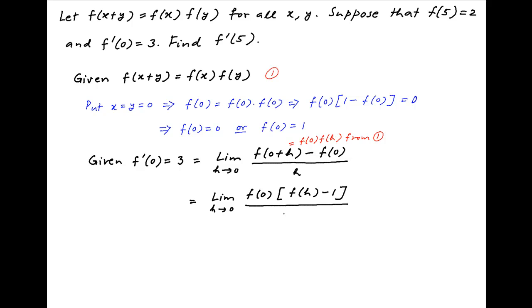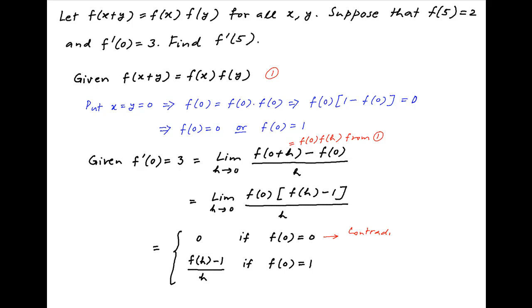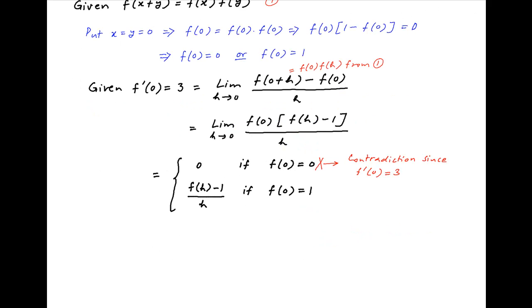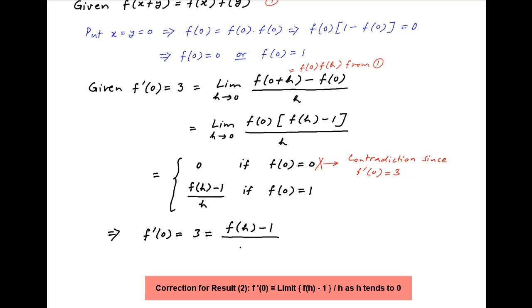In the case when f(0) = 0, this limit becomes 0·[f(h) - 1] / h, which equals 0. So f'(0) = 0 in that case. This is a contradiction because we are given that f'(0) = 3. Therefore that outcome is ruled out, and it follows that f(0) = 1.